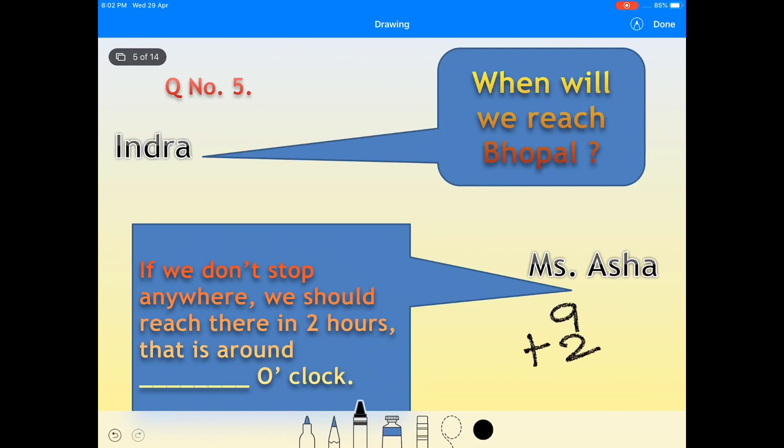Manjit: 'Is it very far, Mr. Vimson?' Mr. Vimson: 'It is about 70 kilometers.'